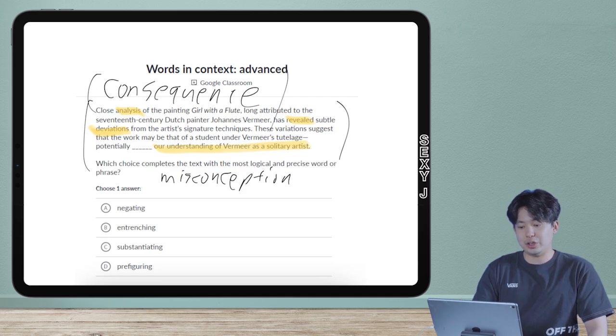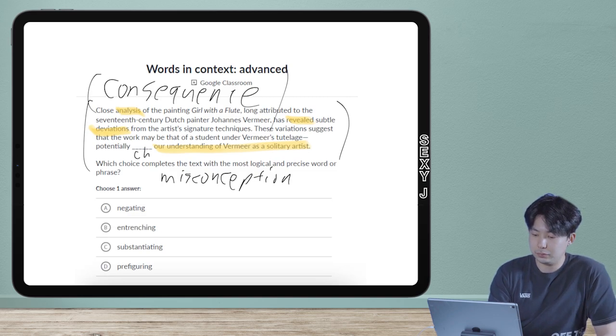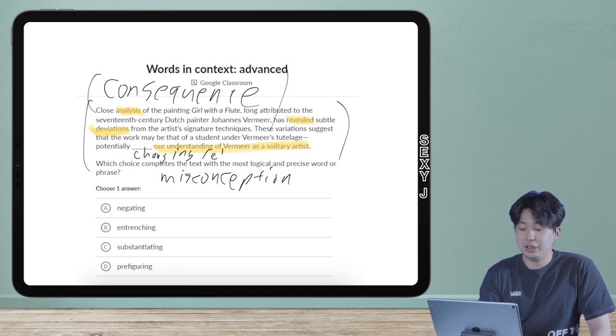We have deviations, so these suggest that this work may be... The analysis has revealed that there are deviations or going away from what is normal. So the typical answer if this was not an advanced question, if this is a medium question, would be potentially changing, or if I'm just going to be outright more positive: enhancing.